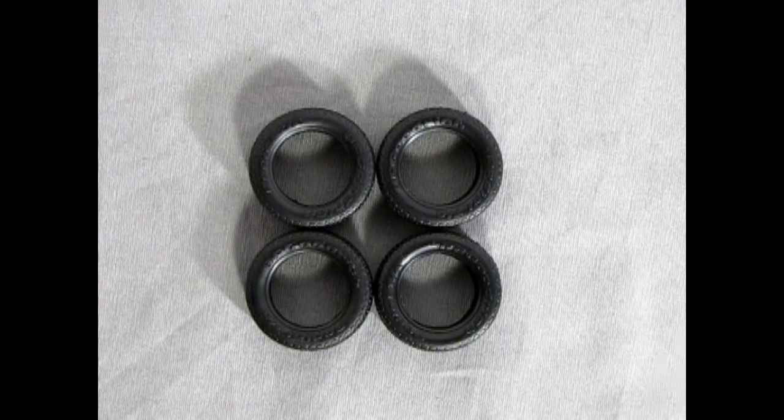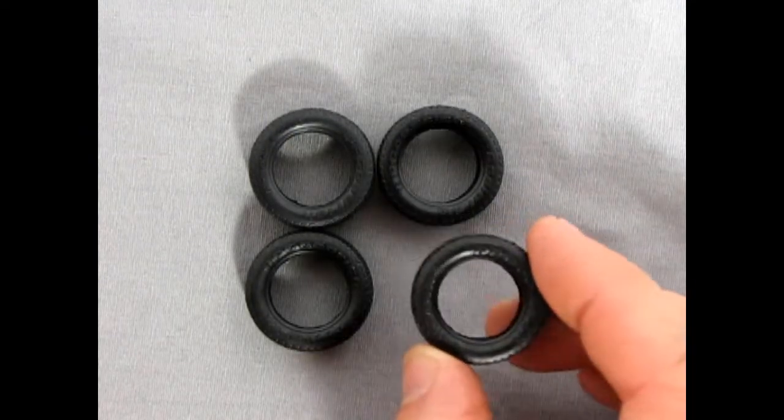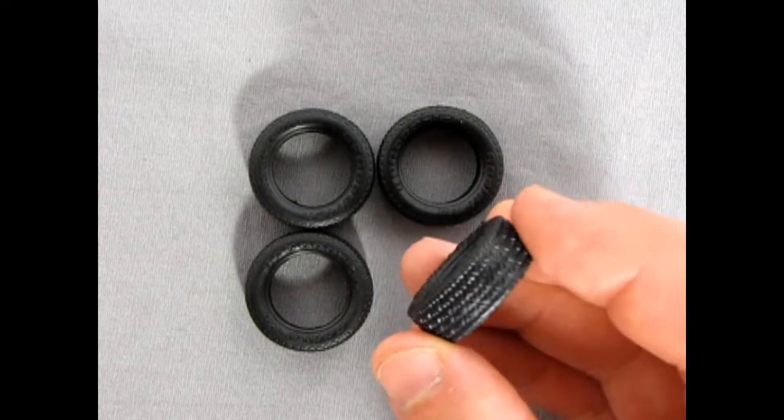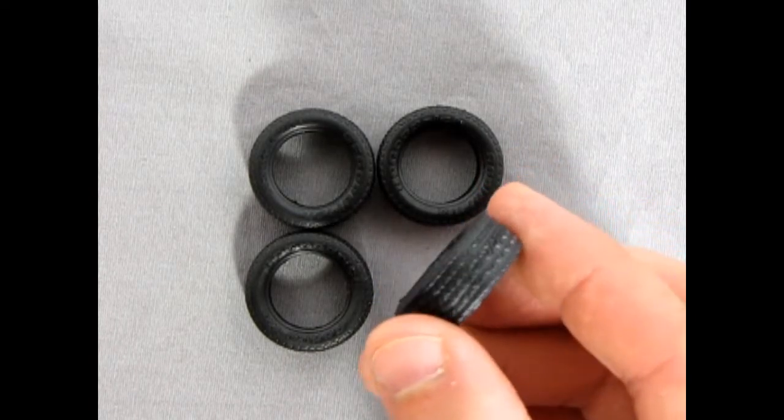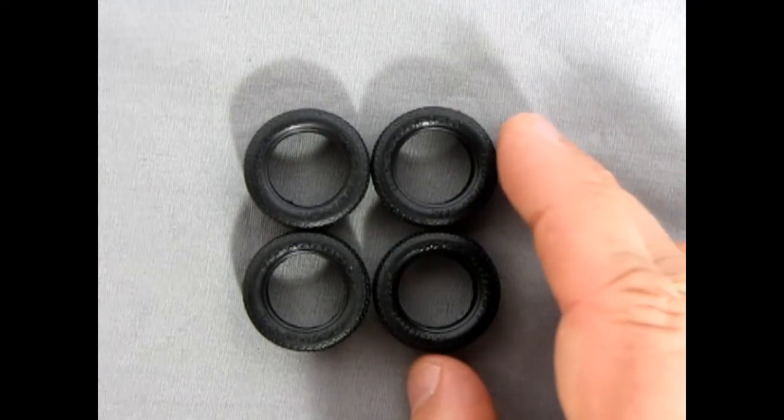The tires included in this kit are not quite accurate to the real car. These are BF Goodrich Radial TAs, which would have been more later 70s than early 70s. We have the nice tread pattern on here, which is quite good. So if you don't mind having your car with later model tires, you're fine.